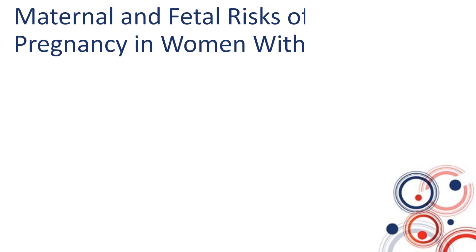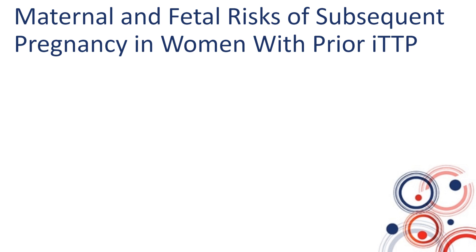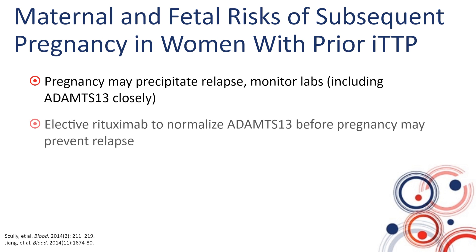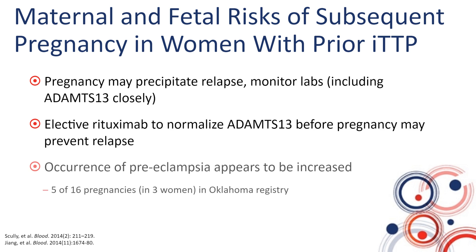Getting pregnant after recovering from TTP may also come with risk. For women with a prior history of acute TTP, a subsequent pregnancy may precipitate relapse, which is why it is important to monitor labs including ADAMTS13 activity closely during pregnancy — and ideally before pregnancy as well. There is a role for elective rituximab to normalize ADAMTS13 activity before pregnancy to try to prevent relapse. A series of 16 pregnancies from Oklahoma also noted a higher rate of preeclampsia in these women.